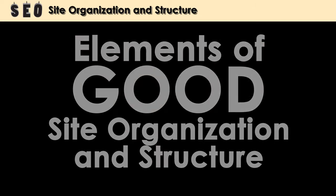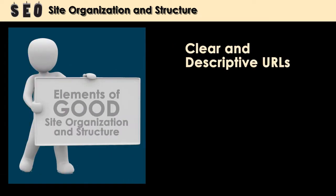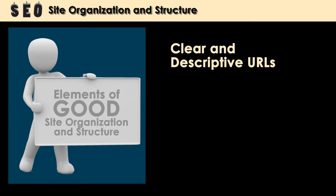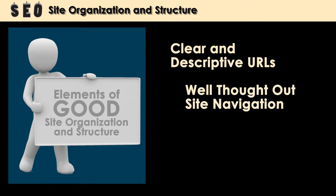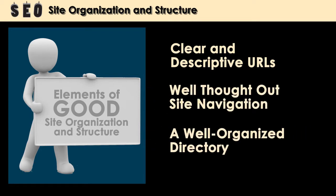The elements that make up good site organization and structure are: clear and descriptive URLs, well-thought-out site navigation, a well-organized directory, and finally, a sitemap. Let's take a closer look at each one of these.